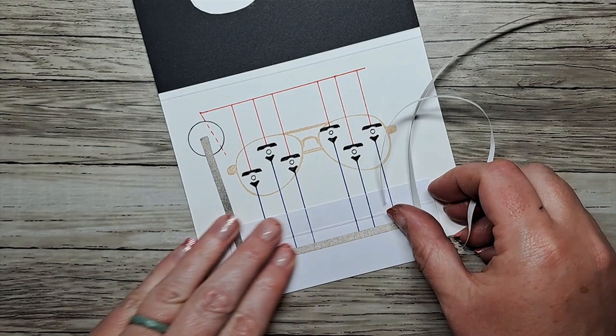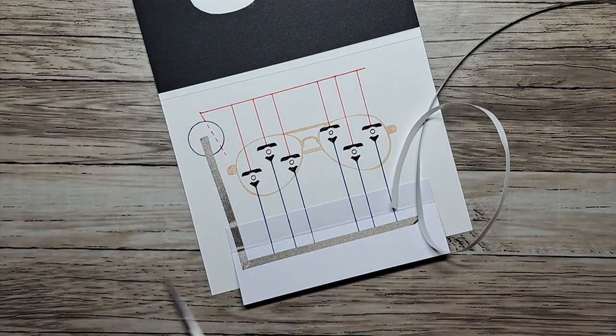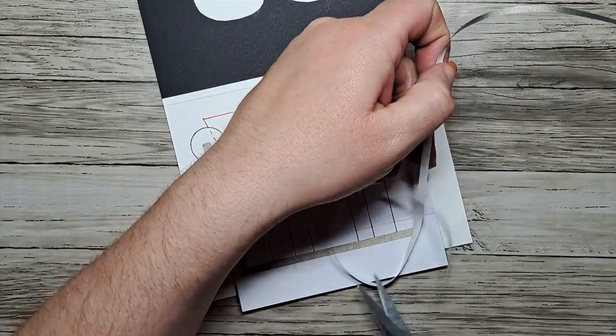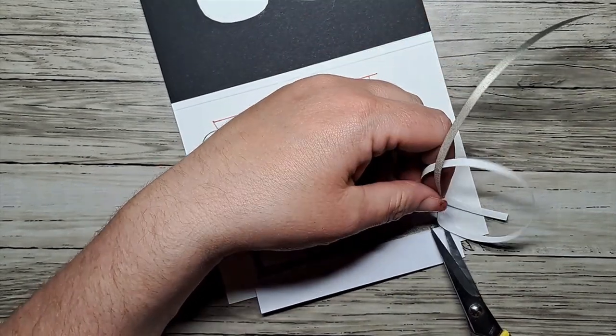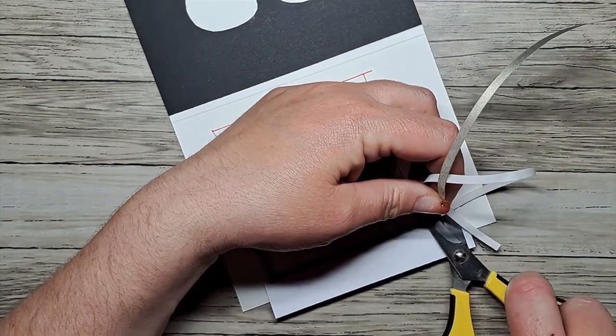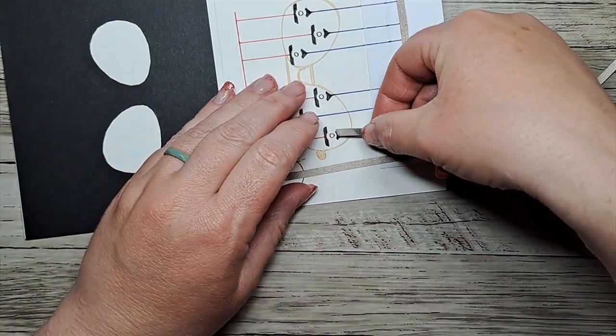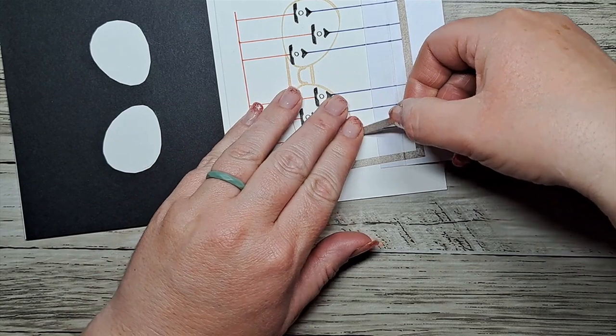And it trims very easily with a set of scissors and a quick snip. This will also work with our copper tape, but since we're using the craft with lights kit, it includes this conductive fabric tape.